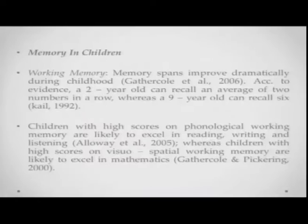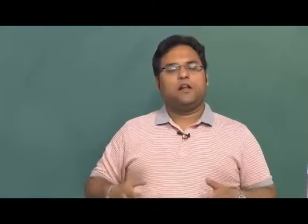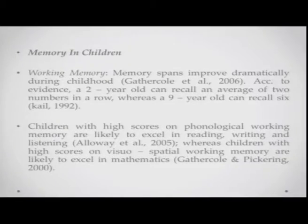Let us now talk about memory in slightly older children. Working memory spans improve dramatically during childhood. Research evidence shows a two-year-old can recall about two numbers in a row, whereas nine-year-olds can already recall around six. Children with high scores on phonological working memory are likely to excel in reading, writing, and listening tasks, whereas children with higher scores on visual-spatial working memory are much more likely to excel in mathematics.